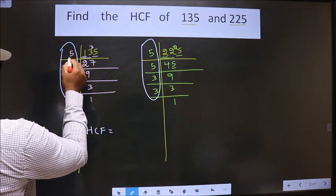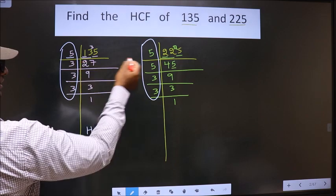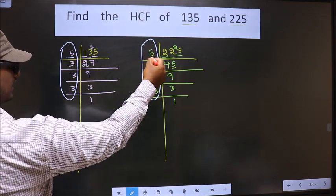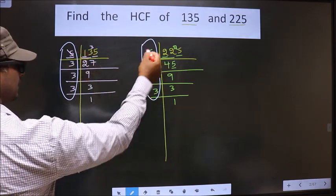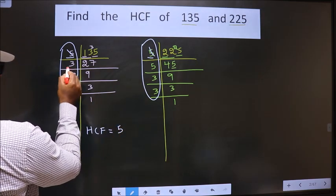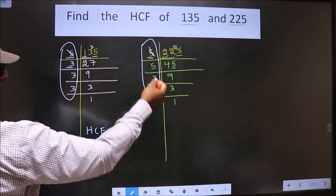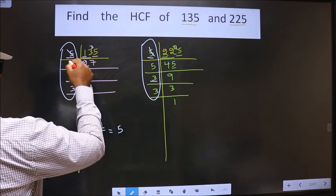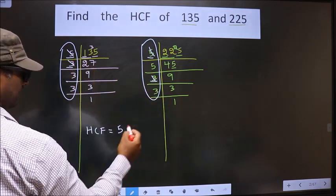Starting with number 5. Do we have 5 here? Yes. So, cut these 5 and write here. Now, the next number is 3. Do we have 3 here? Yes. So, cut the 3 and write here.